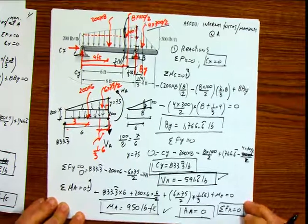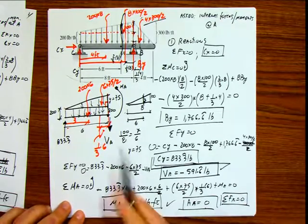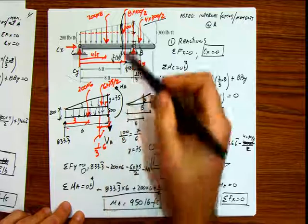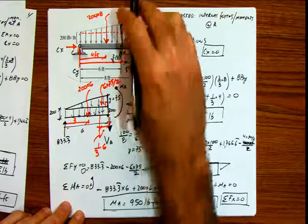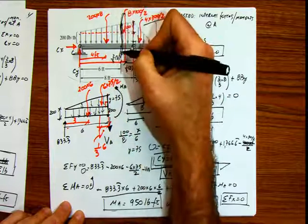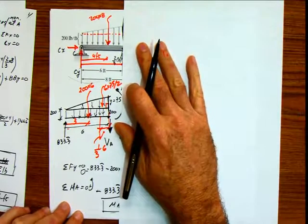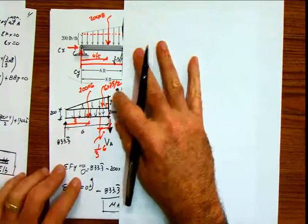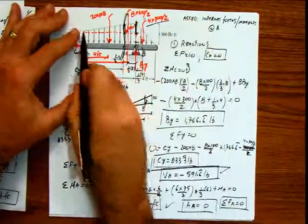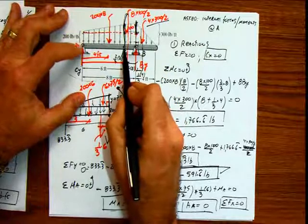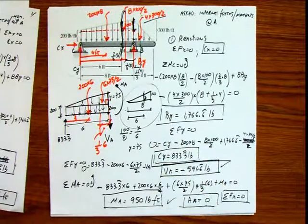In summary, we calculated the reactions. The only complication here is that the section is at this point, so we don't know the height of the distributed load there. Whenever you make a section, you have to cut everything and keep what's on one side. Calculating that height is not complicated — it's just a ratio between the total height and base versus the cut length and the new height. And that's what we did. I hope you enjoyed this video — see you in the next one.